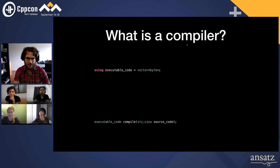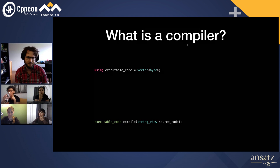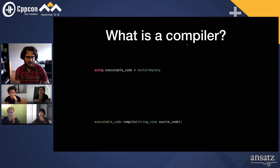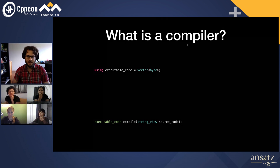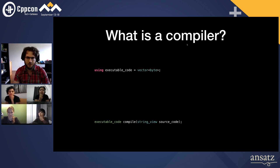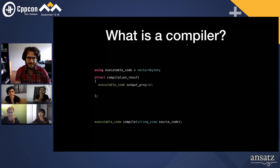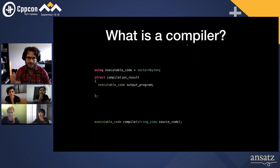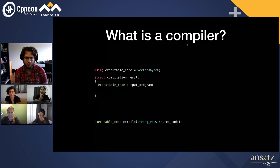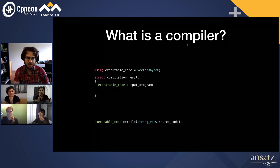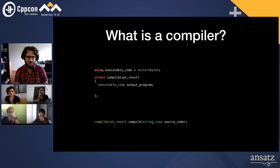We're going to refine our signature here by using a more semantic return type. So basically, we're invoking compile, providing a string view that is code, and getting back executable code. This is a simplistic view of what a compiler is, but it's useful. Most of the time when we invoke the compiler, we'd like a meaningful program to come out. We can then replace the result type with a 'compilation result' type to go into more detail about what the compiler produces.